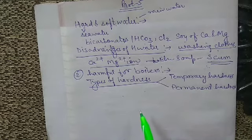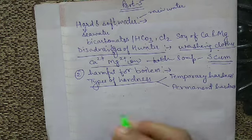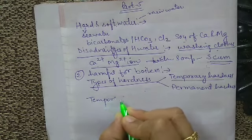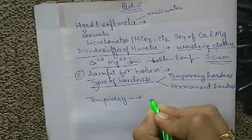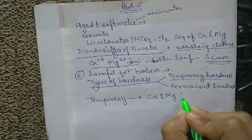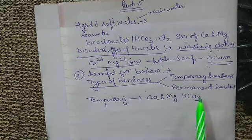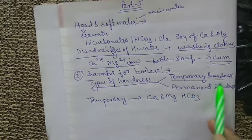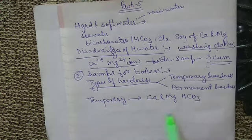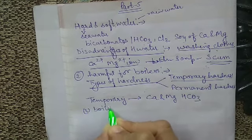Temporary hardness is due to the presence of calcium and magnesium hydrogen carbonates. As it is clear from the name, it is temporary, meaning it can be removed using some special techniques. The first technique to remove temporary hardness is boiling.